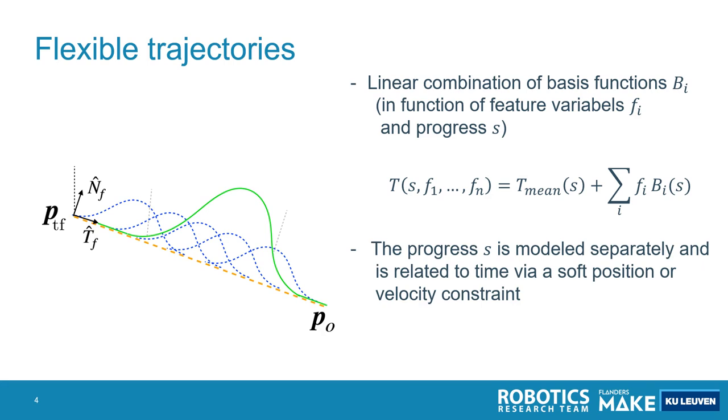Also, this progress variable is important. We don't make this trajectory in function of time, but we make it in function of a progress variable S, such that we can specify the relation between S and time with a separate constraint, and we can accurately specify the exact semantics that we want to have.